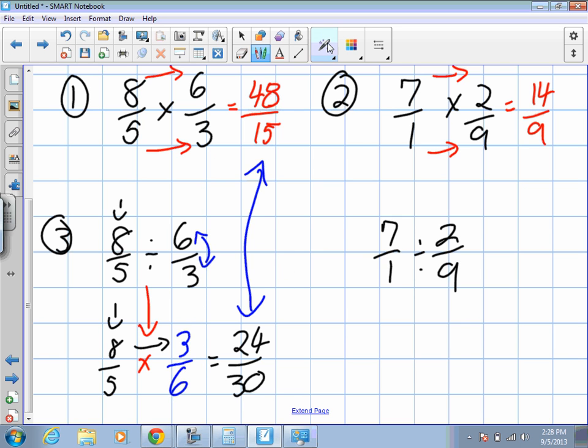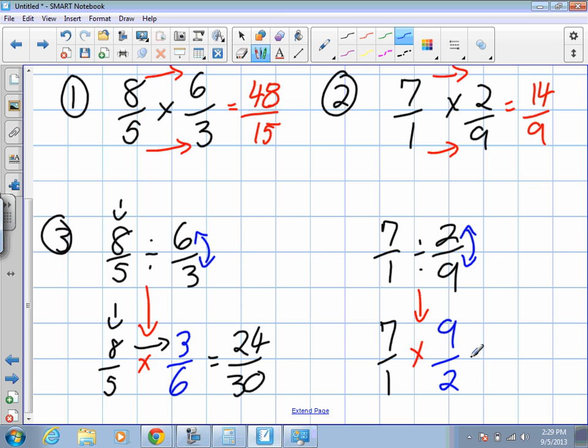Okay? Same idea here. We keep the 7 over 1. We change the division into a multiplication, and we invert the 2 and 9, so we get 9 over 2. What is 7 times 9? Very good. 2 by 1? 2. And that's it.